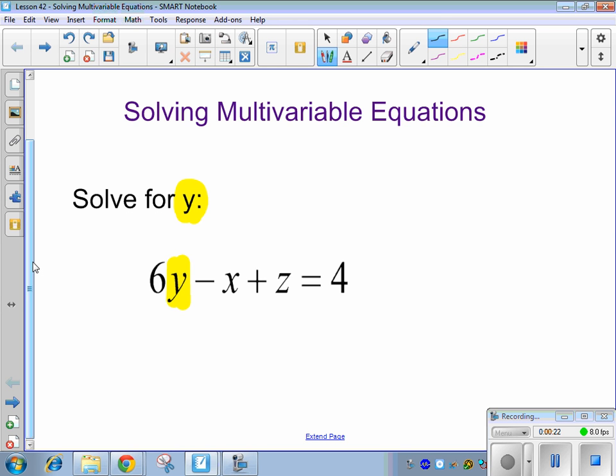So we're used to solving equations when we have one variable. We get everything with that variable on one side, everything that doesn't have the variable on the other side, and then we just do some dividing or multiplying. For these ones, we want to do a similar thing. We want to get the piece that has our variable, so we want to solve for y, on one side and everything else on the other side.